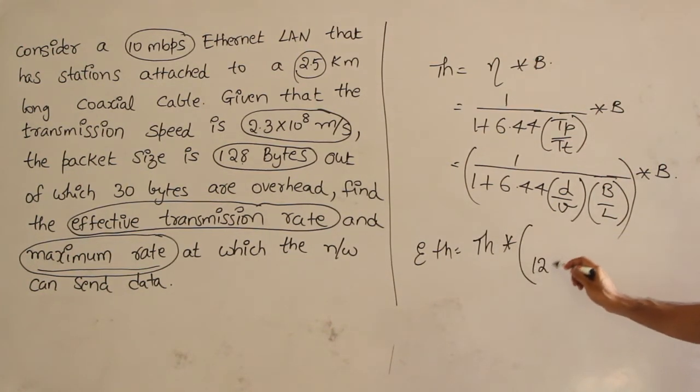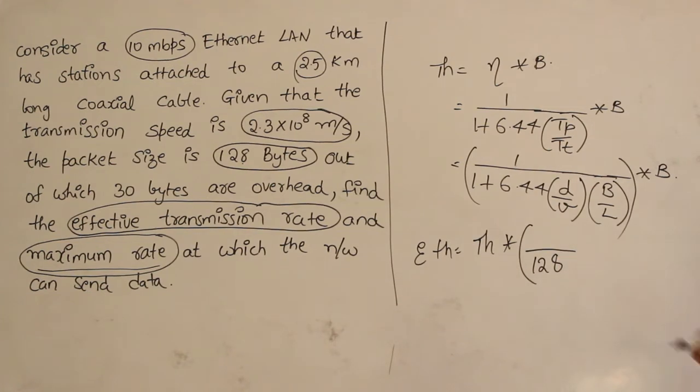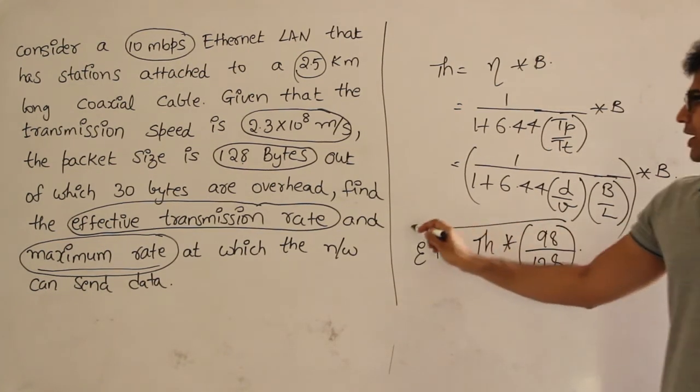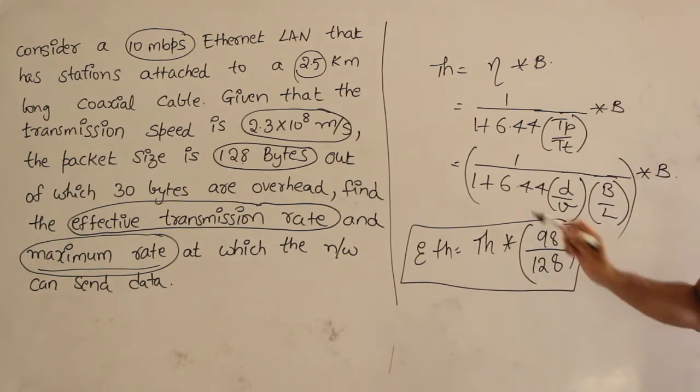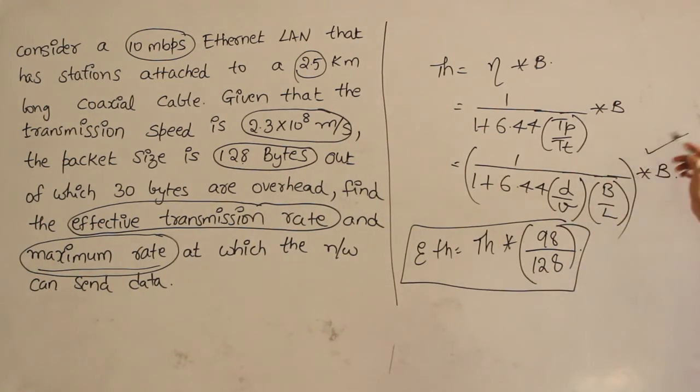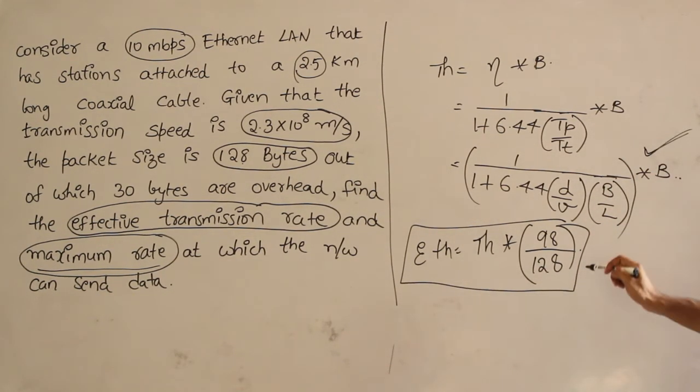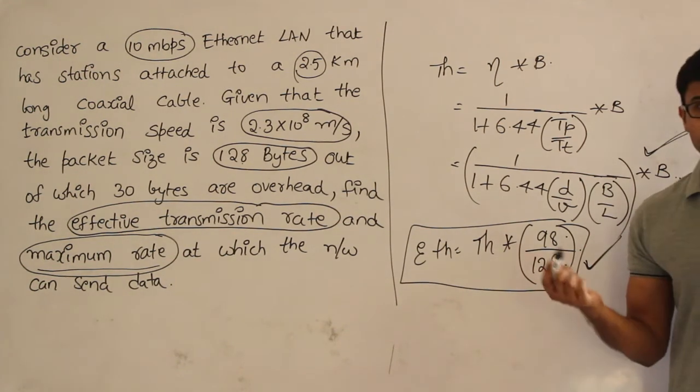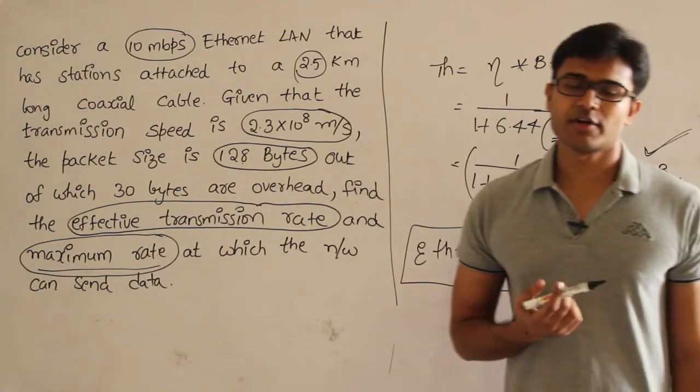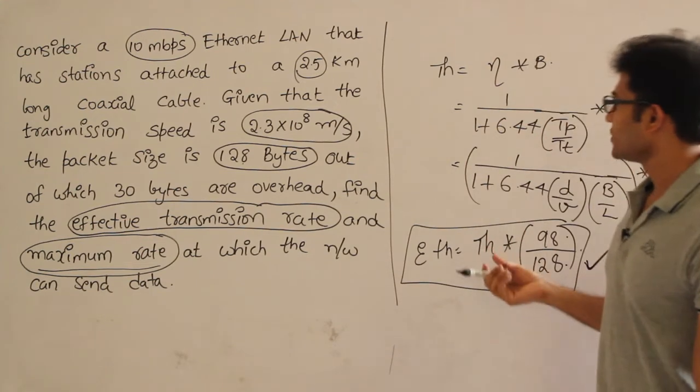Even though you're sending 128 bytes, out of which 30 is wasted, therefore 98 bytes is useful data. The effective transmission rate is the maximum throughput times 98/128, because 98 bytes is useful out of total 128 bytes.